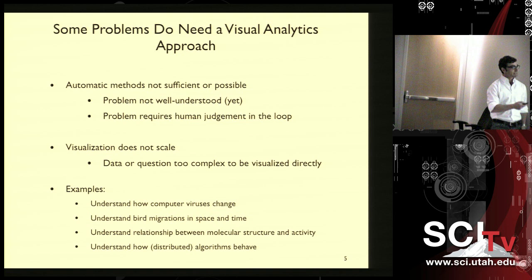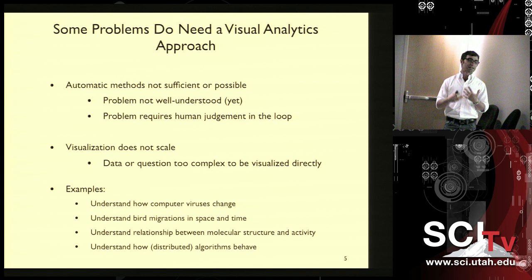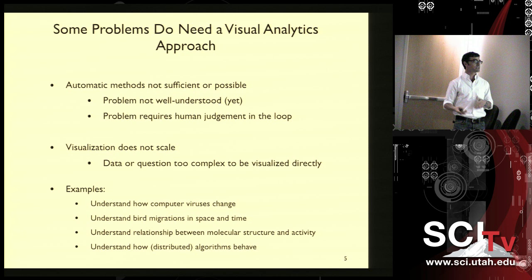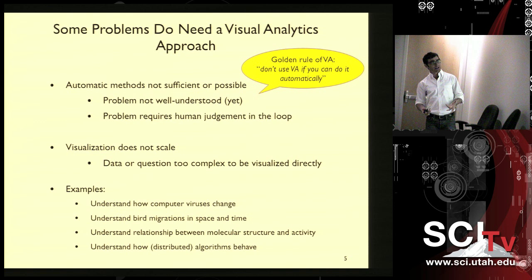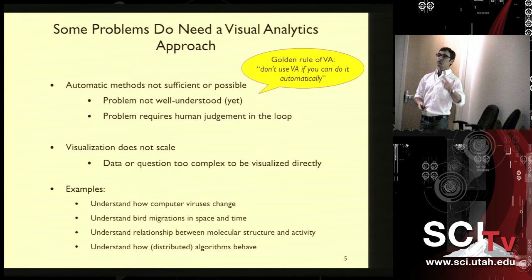On the other side, we need to apply automatic algorithms to either reduce the data first or extract meaningful patterns, because it doesn't make sense to visualize raw data as it comes. Examples include understanding how computer viruses change, understanding migrations in space and time, understanding relationships between molecular structure and activity. Here is a golden rule of visual analytics: don't use visual analytics if you can do it automatically. Ask yourself first: can I solve it with an algorithm? If not, then visual analytics is really valuable.